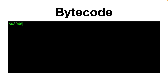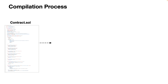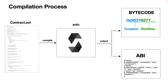Everything that exists on Ethereum is bytecode. When you write smart contracts, they get compiled into bytecode via the solc compiler — the Solidity compiler. The bytecode gets divided into creation and runtime bytecode, and another thing the solc compiler generates is something called the ABI, which is necessary for the outside world to communicate with contracts that exist in the form of hexadecimal bytecode.